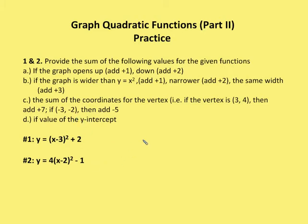Let's take care of the first problem. I have a quadratic function in vertex form. I know the a value is one — it's not stated, but I have a one here. So I know the graph is positive and opens up, so that's a plus one. Then I'm going to find out if the graph is wider, narrower, or the same width. Since the absolute value of a is one, it's going to be the same width, so I add plus three.